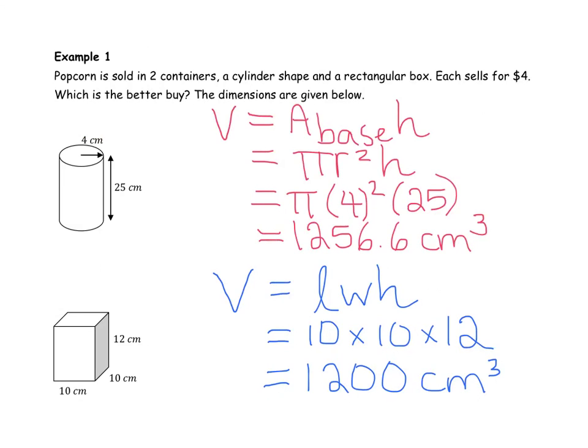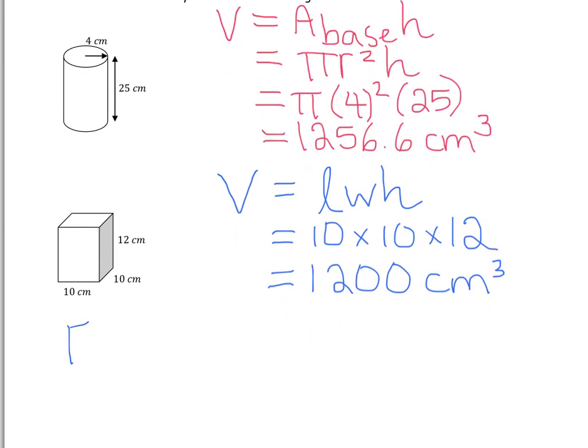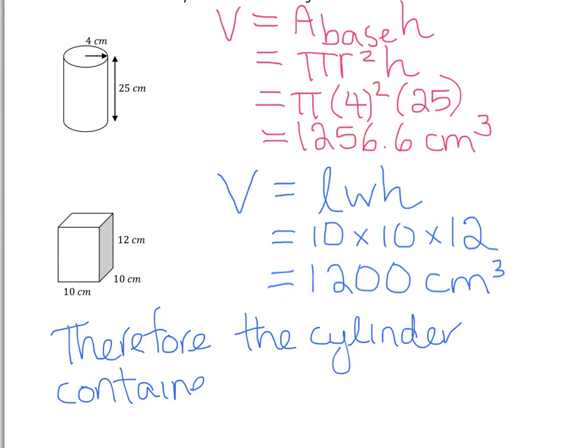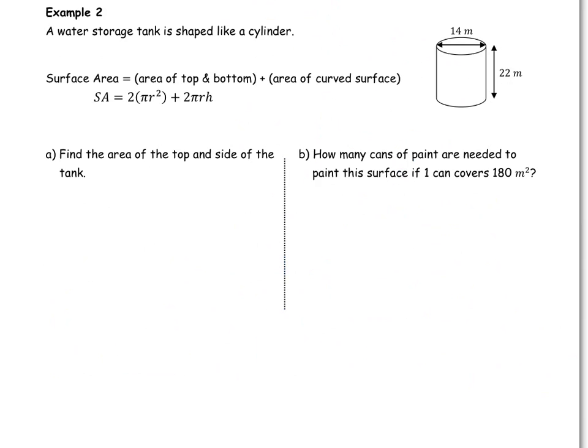Now that we have our two volumes calculated, we can clearly see that the cylinder has a higher volume, which of course would mean that it holds more popcorn. And so we just need to write a therefore statement. Therefore, the cylinder container is the better buy because it holds more popcorn.